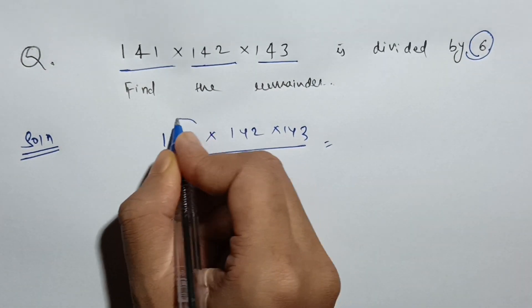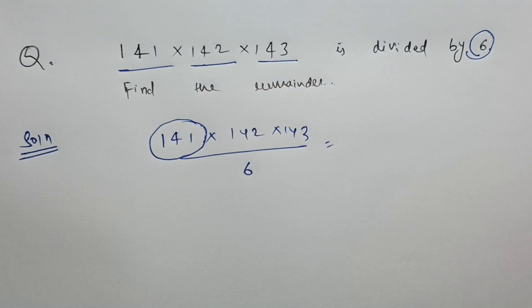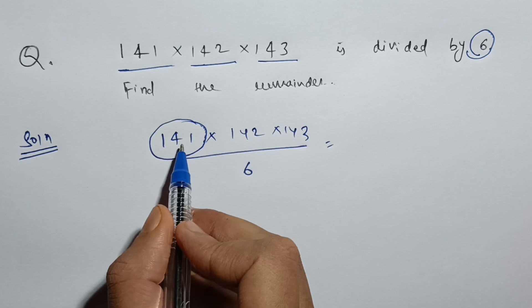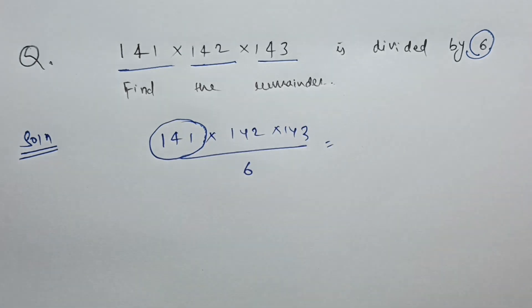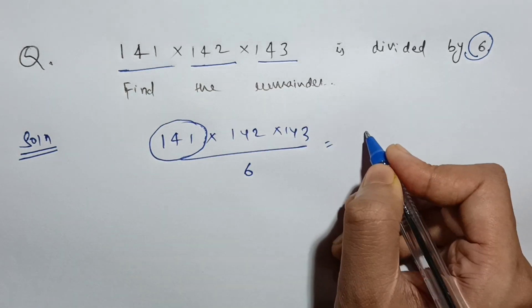Now what is the remainder when I divide 141 by 6? If you divide 6 into 2, 12, 21, this will be 3, 18 and 3. So the remainder is 3.